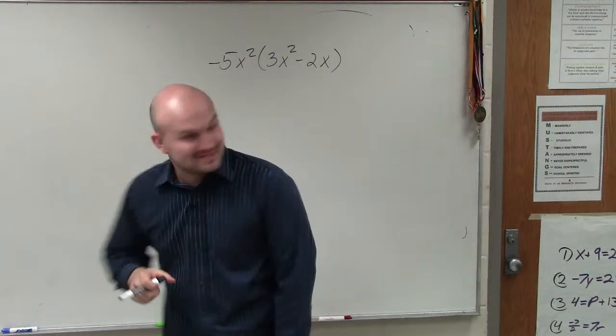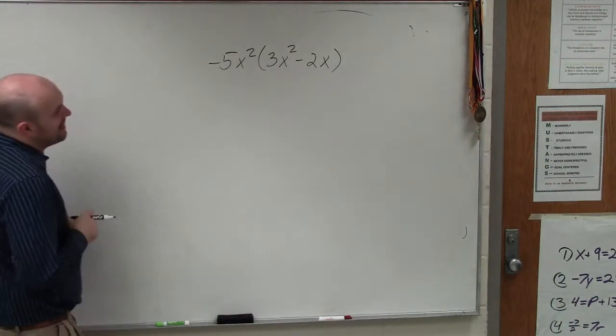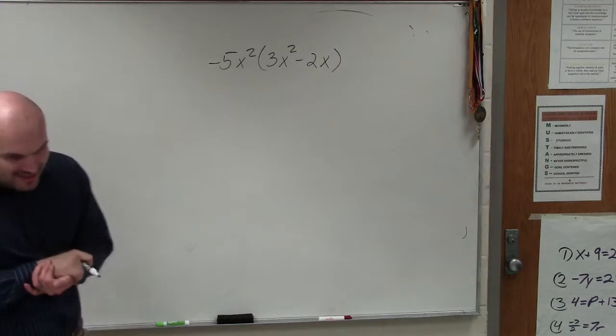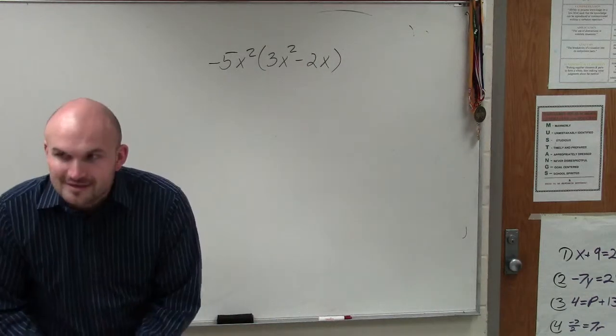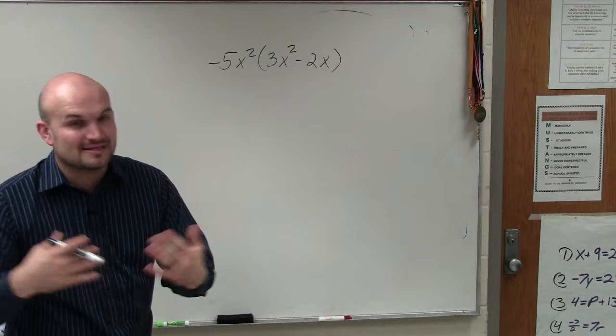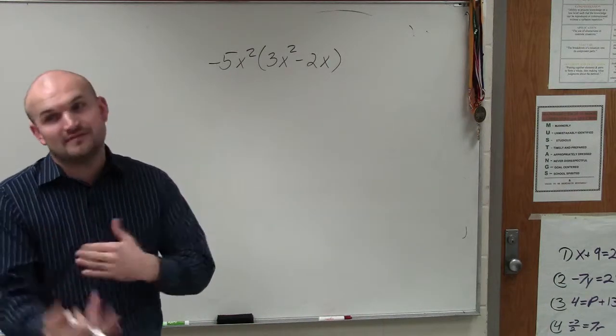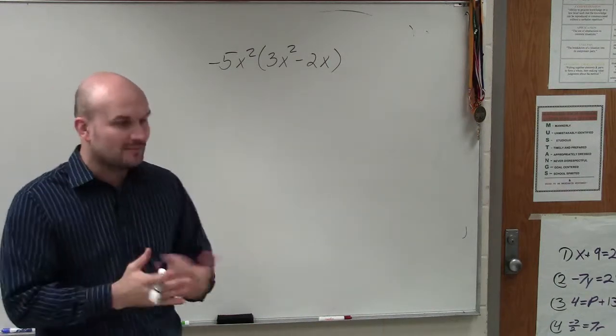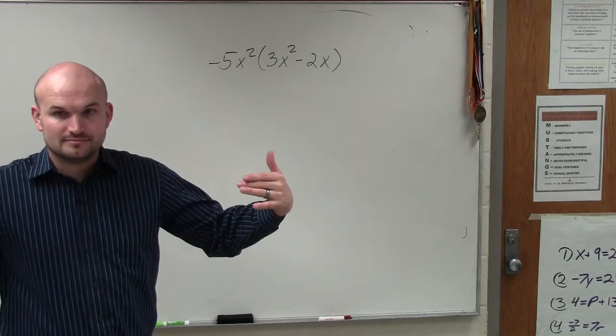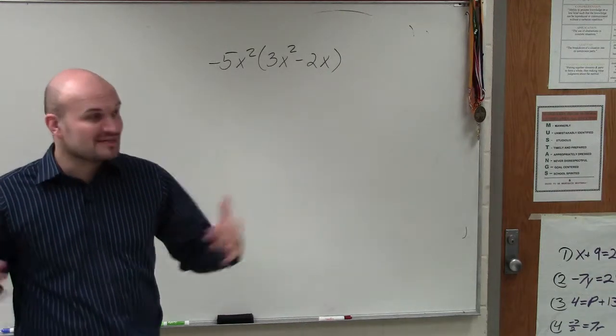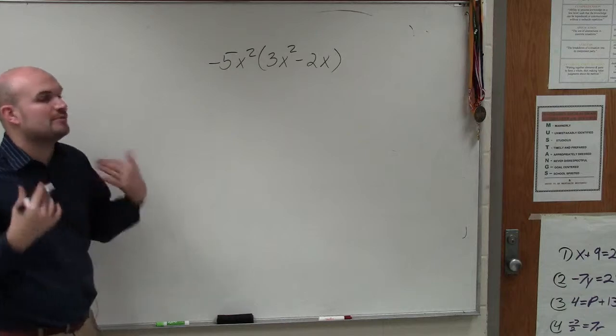So now we have -5x² times 3x² minus 2x. And basically, ladies and gentlemen, just to review—some of you guys are asking, hey, we've seen this before. Yeah, we've covered this in Algebra 1, Algebra 2, distributive property. But it's going to get a little bit more detailed as it goes on, so I want to make sure I review this.